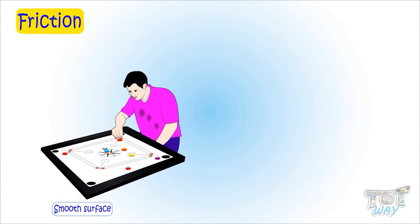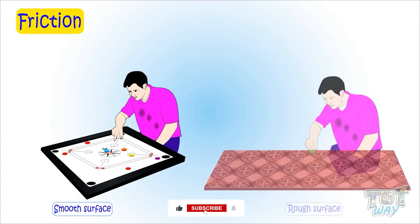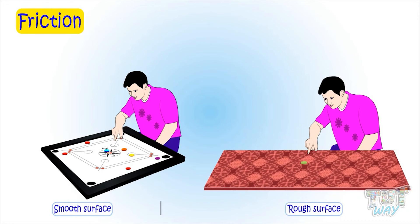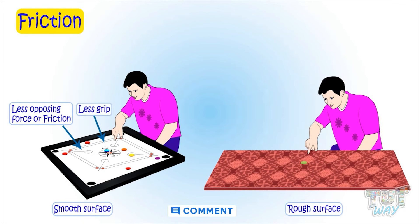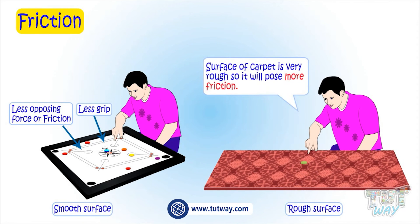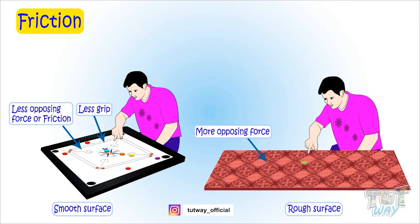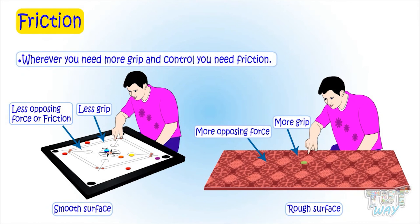Here is one more example. Push a striker on the carom board and see how far it goes. Now push a striker on the carpet and see how far it goes. The striker goes much farther on the carom board because there is less friction — no opposing force and no grip. The carpet surface is very rough, so it poses a lot of friction and opposing force for the movement of the striker, and there is much more grip between the striker and the carpet, so it doesn't move much. So wherever you need more grip and control, you need friction.